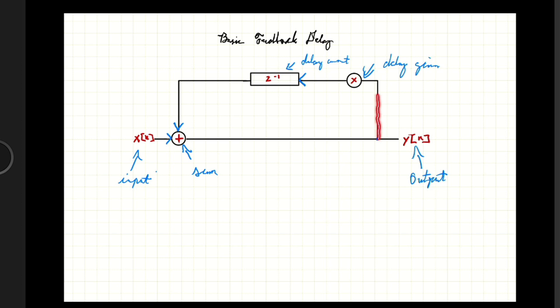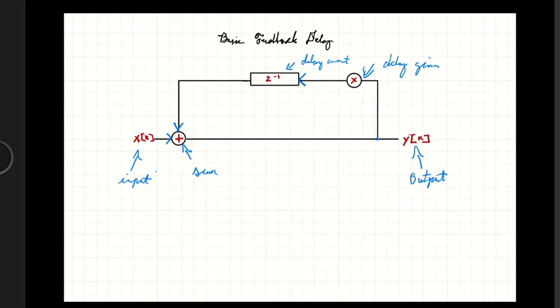But we also have this other part where, if we look at the arrows, the signal is actually going back on itself — that is what we call the feedback delay. As we go down the line, we have our input signal, then at this point we're copying the signal back and multiplying it by a gain less than one. Then we read from that signal in the past — that's the delay amount. Anytime you see z⁻¹, that just means we're reading from somewhere back in the past by a delay amount.